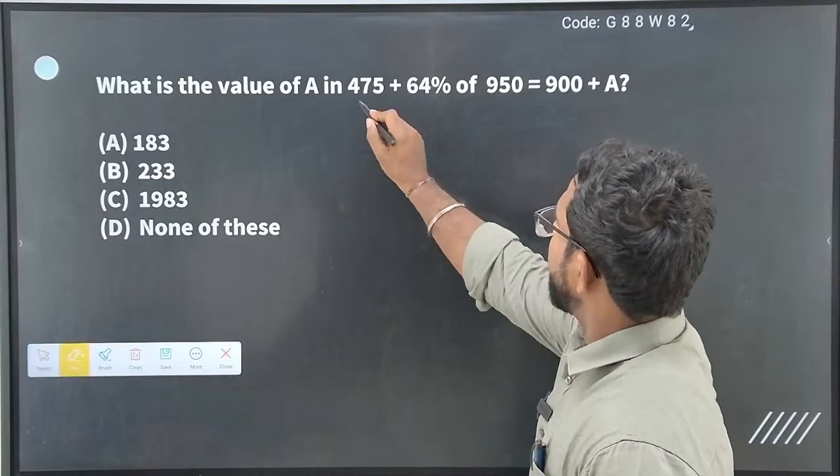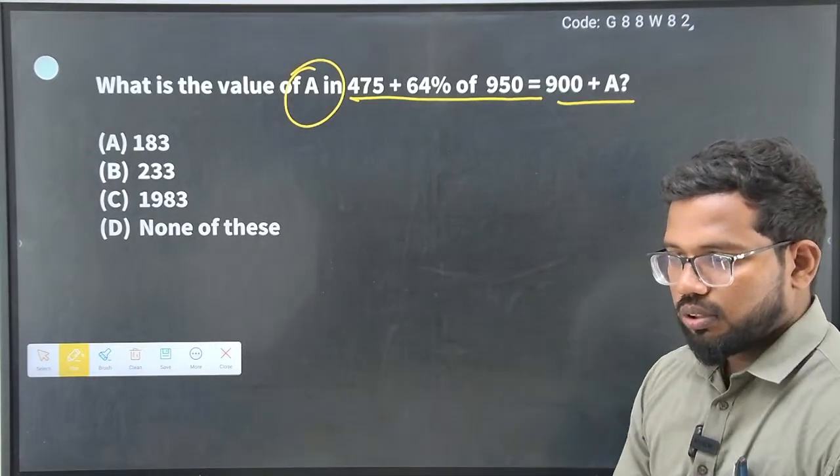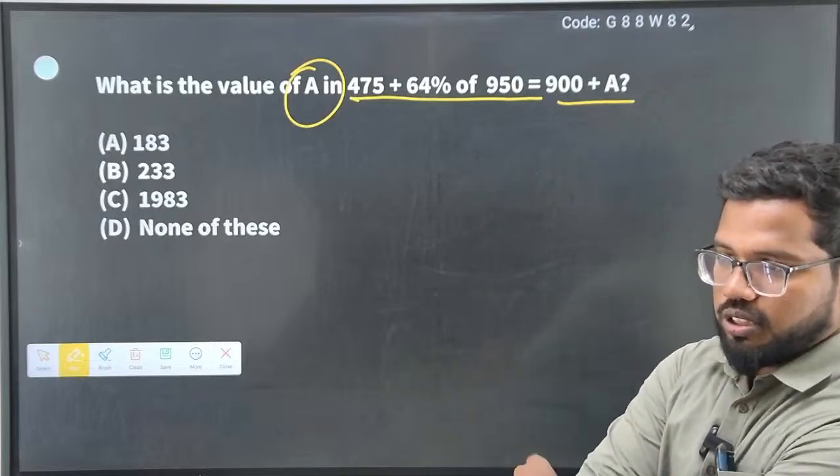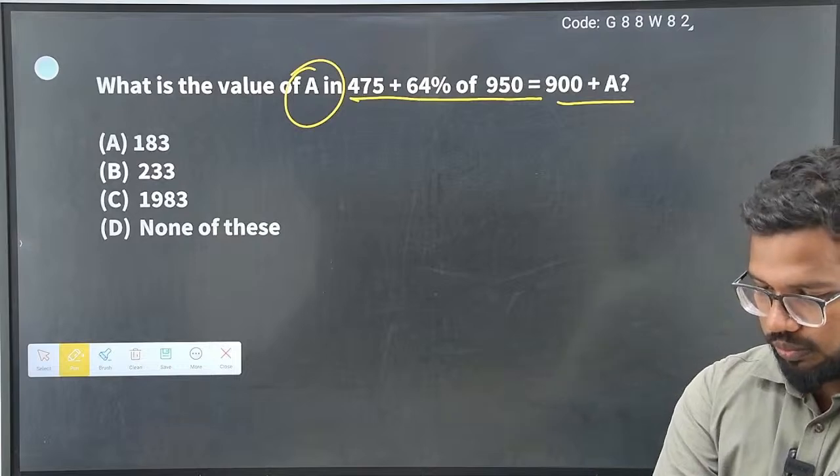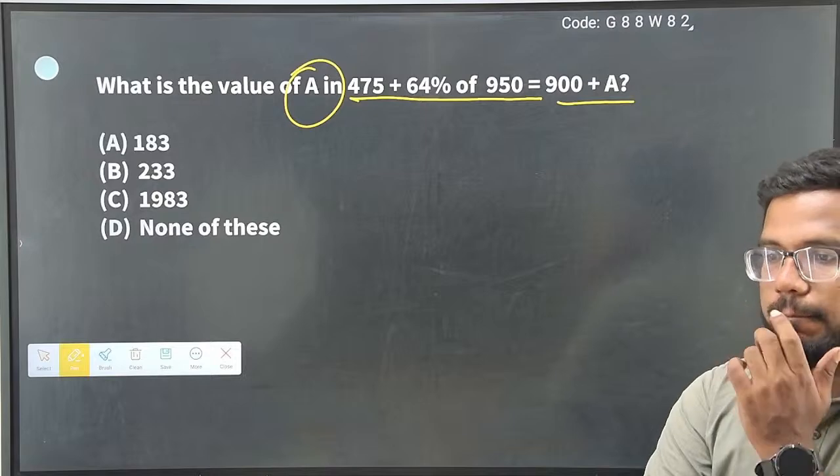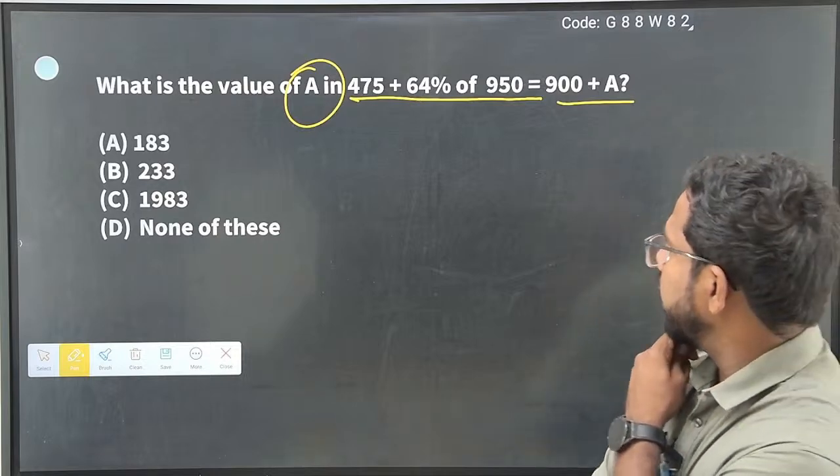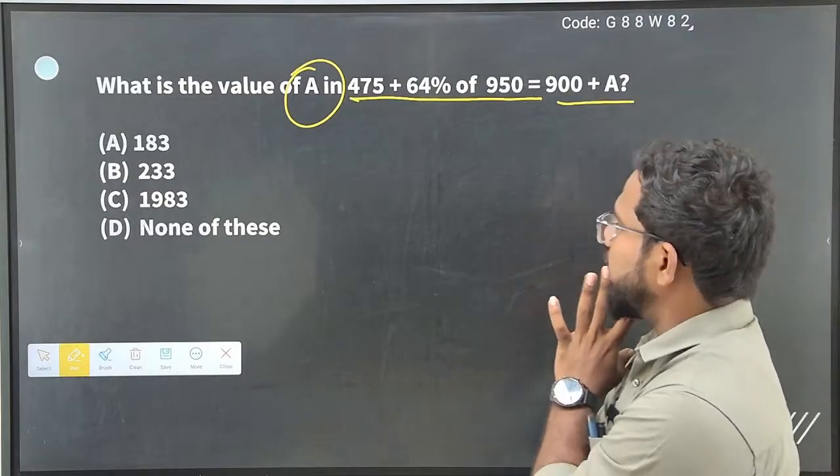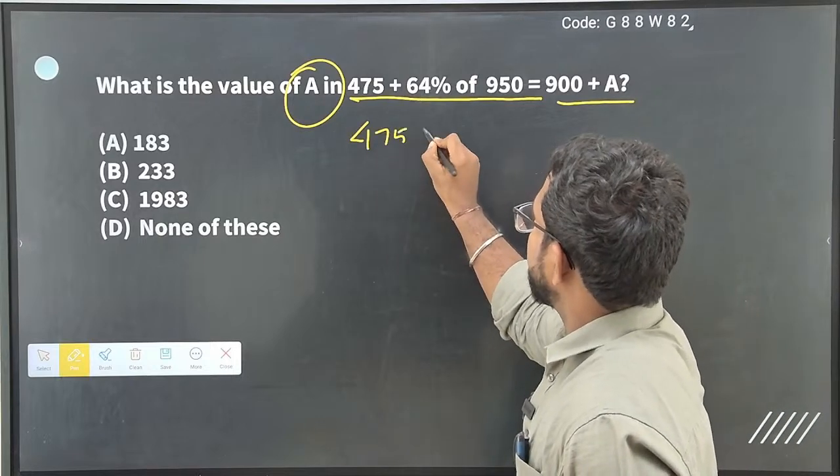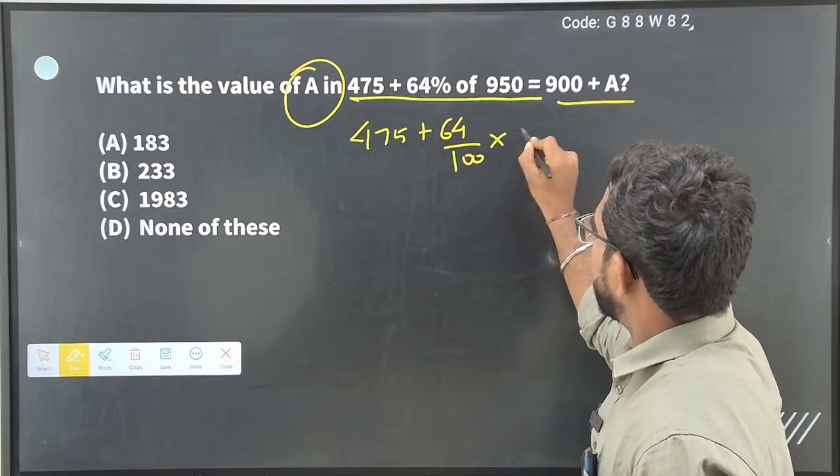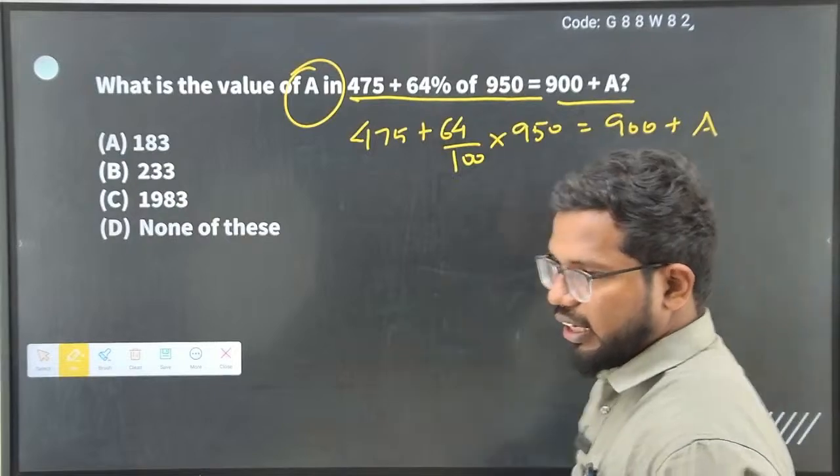What is the value of 475 plus 64 percentage of 950 is equal to 900 plus A? So A amount you need to find now. Okay, no issues. Sabarish, try to answer question number three. So here you can directly just convert numbers: percentage by 100, multiply, addition, that's the final subtraction. So 475 plus 64 percentage by 100 multiplied with 950 equal to 900 plus A. So you first do this operation and addition. Then bring 900 to left side. That's all.